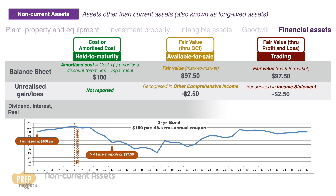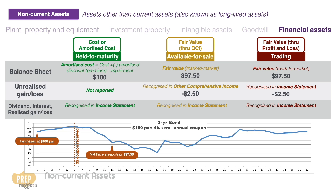For all three classifications of securities, dividend and interest income and realized gains and losses are recognized in the income statement. Therefore, the $2 coupon that has already been collected is recognized as a realized gain in the income statement. This basic framework of accounting using amortized cost, FVOCI, and FVPL methods should suffice for now — there are more complicated calculations, but you won't need to worry about them until Level 2.